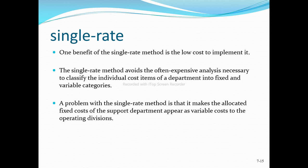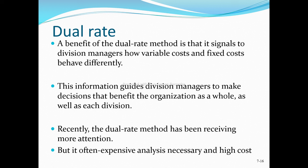The problem with the single rate method is that it makes the allocated fixed cost of the supporting department appear as a variable cost to operating divisions. Since all costs are combined in one rate, fixed costs appear variable — which is a drawback of the single rate method.